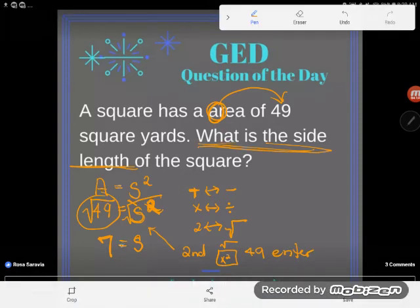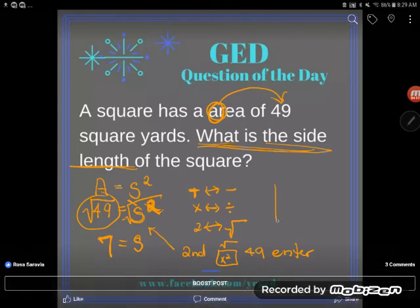Okay so we have S is equal to 7 but 7 what? This is a geometry problem. I need my units. Okay so we're talking about a side length here. S is just a side length. If you look at the length of a square it's just a line. A side length is just a line, a linear measurement. And so it's going to be seven plain old yards.